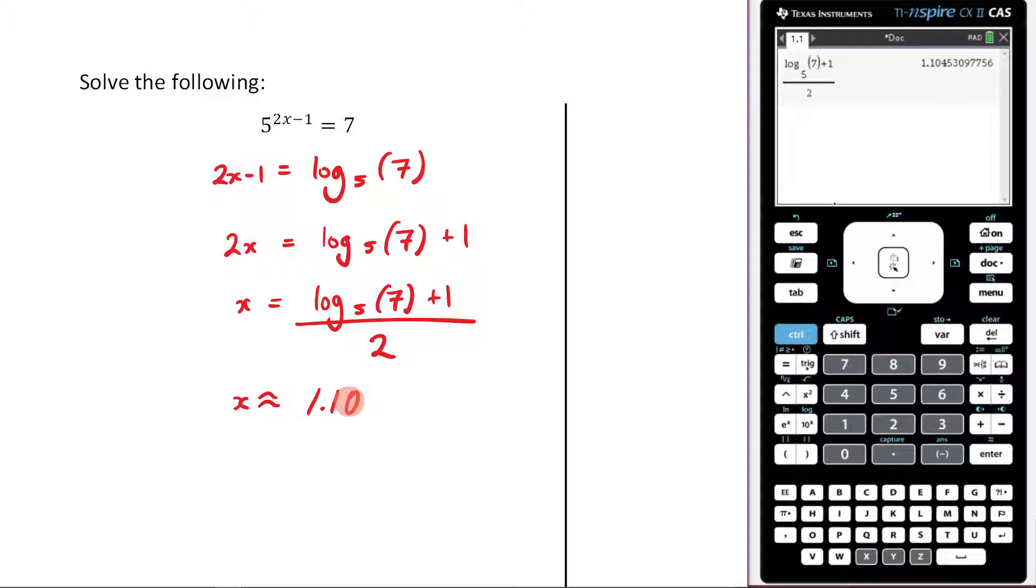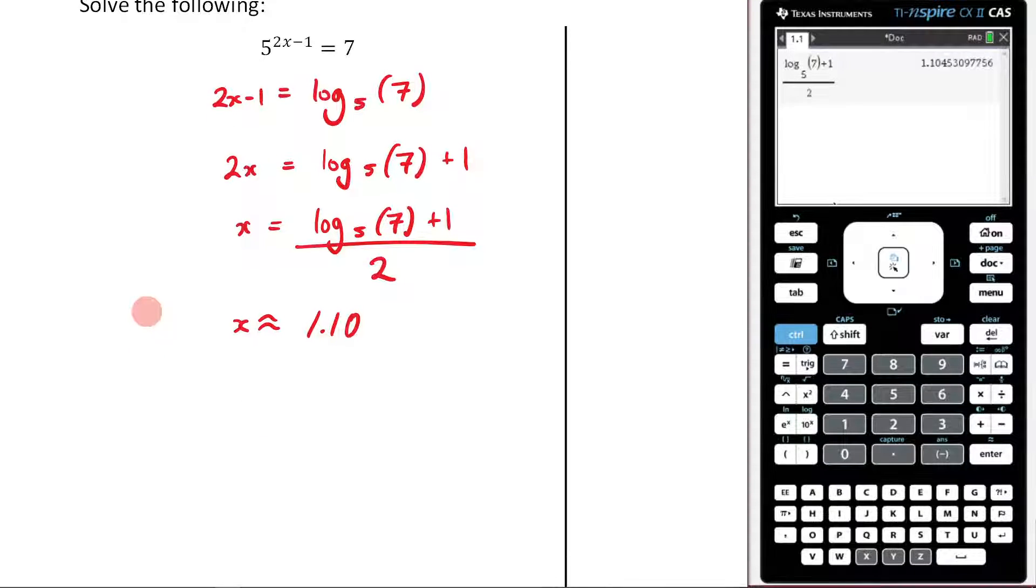What's an alternative way we could have answered this question? Well, what if we decided to take the log of both sides? So what if I instead took the log of both sides? And let's take the log of 5. So take log of 5 of both sides.